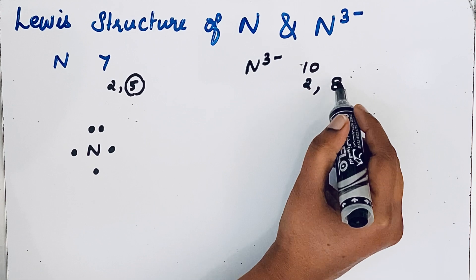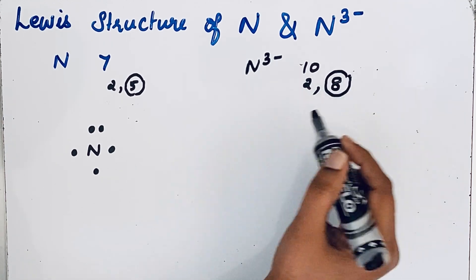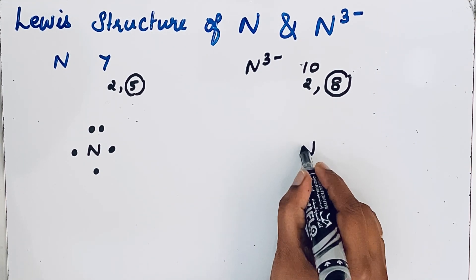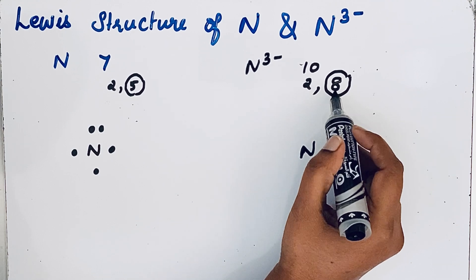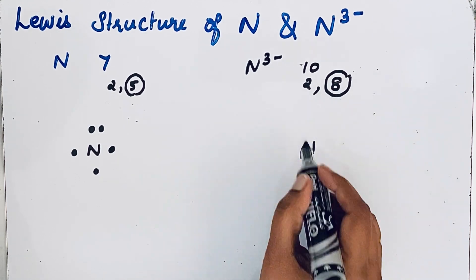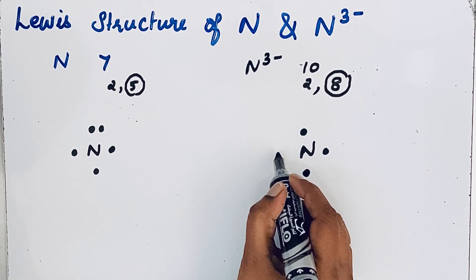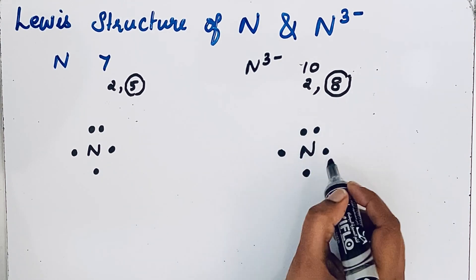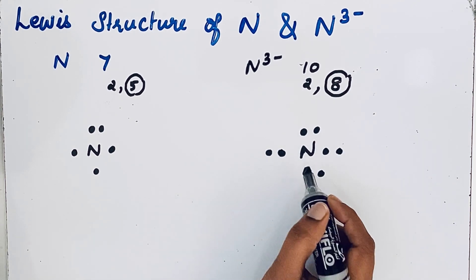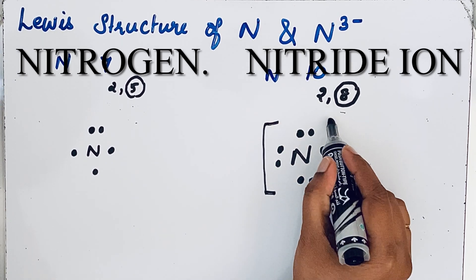The valence electrons in nitride ion is 8. So we're going to draw the Lewis dot structure of nitrogen showing these eight electrons in the form of dots: one, two, three, four, five, six, seven, eight. Since it is an ion, we're going to draw a bracket.